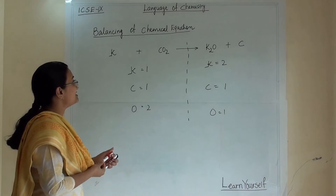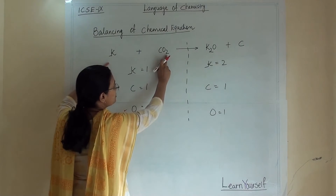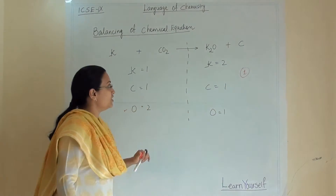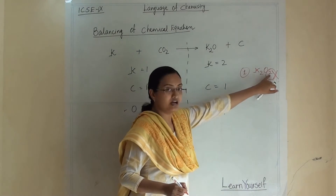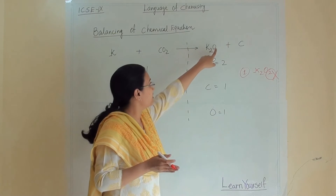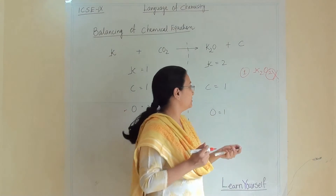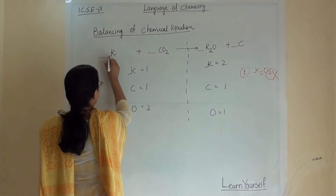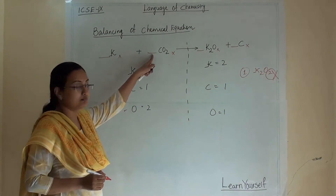Let us first balance the oxygen. Here oxygen is 2 on the reactant side whereas oxygen is 1 on the product side. The first rule of balancing equations is you cannot add anything within a formula — you cannot add a subscript. You can only add in front of a molecule, meaning you can only add a coefficient. You cannot add any atom, and practically adding 1 atom into a reaction is not possible. Always add a whole number in front of the reactant or product.